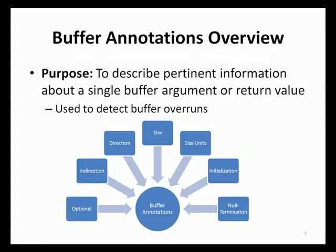The first class of annotations that will be discussed is buffer annotations. This type of annotation describes pertinent information about a particular buffer argument, such as the location of the buffer, its size, and how the function uses that buffer. Annotations in this class are useful for detecting buffer overruns, which are among the most serious vulnerabilities known to date. Annotations found within this class are divided into seven main categories: optional, indirection, direction, size, size units, initialization, and null termination.